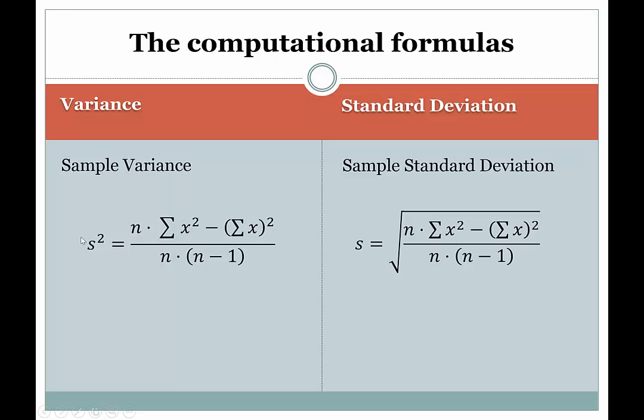Something worth noting here, anything that's squared will end up being positive. So this expression can never give you a negative value. And likewise, when you take the square root of a positive number, you will always get a positive result. So again, this expression will always be positive as well. You cannot have a negative variance or a negative standard deviation.